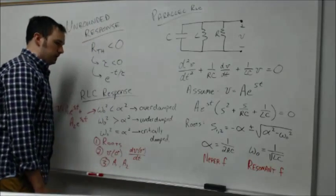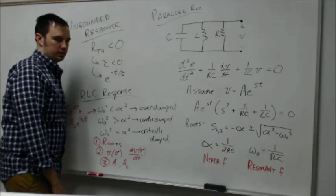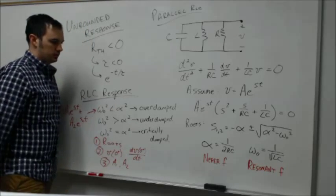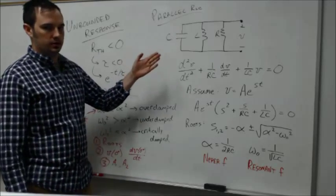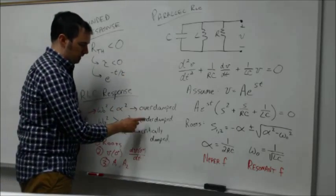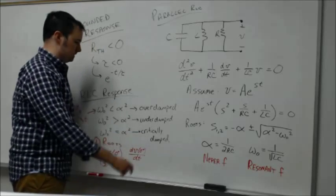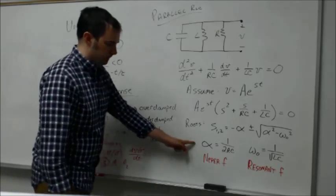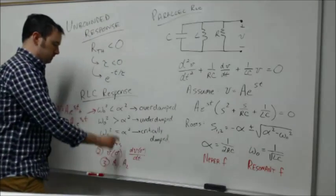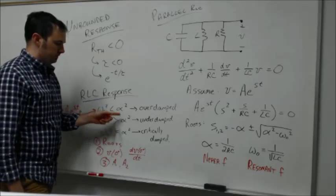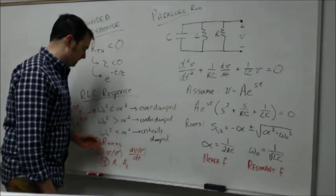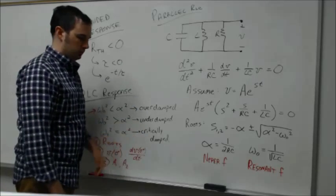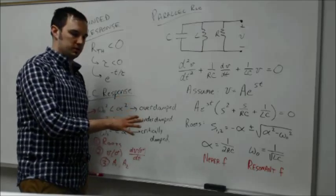In looking at how we can get to a given solution, there are different types of responses that an RLC circuit can experience: overdamped, underdamped, and critically damped responses. The condition for each of those is dependent on the relationship of this alpha and omega naught term. If omega naught squared is less than alpha squared, that's your overdamped condition. If omega naught squared is greater than alpha squared, you're underdamped. And if they're equivalent, then you're at the critically damped condition.